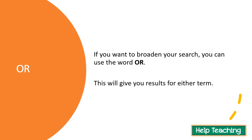The second search operator is OR, and this is used to broaden your search so you can find more information about a topic. You're going to get results for either term, which is good if you want to see what's out there. For example, if you're doing a project on apples or oranges and you want to see which topic has more information, you could use OR for that.